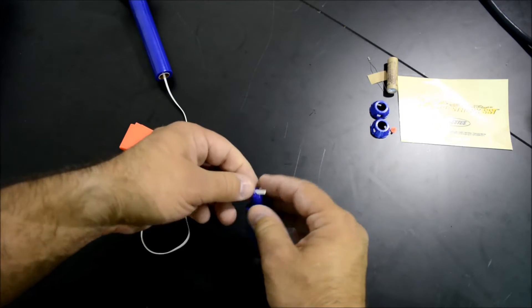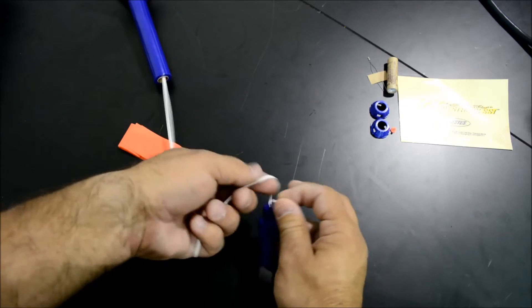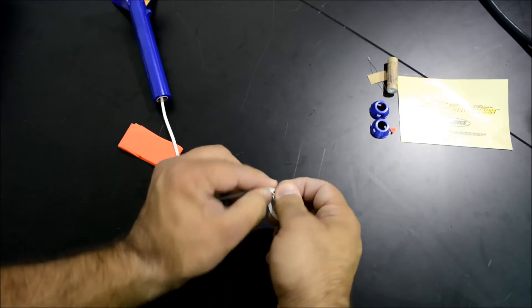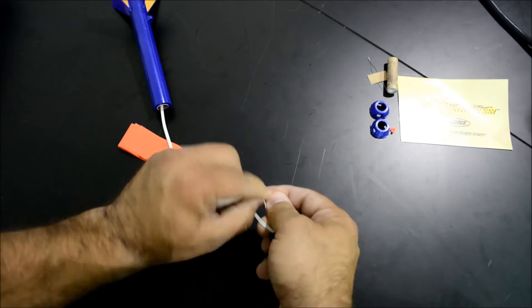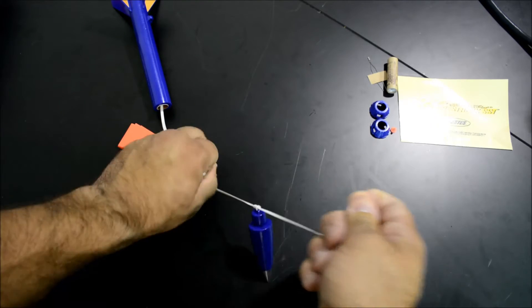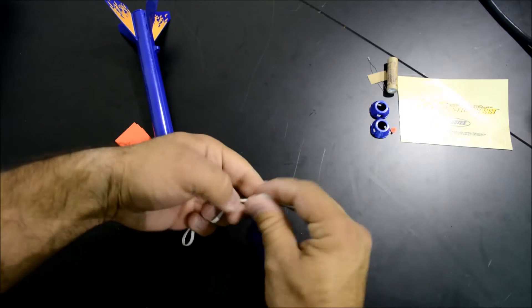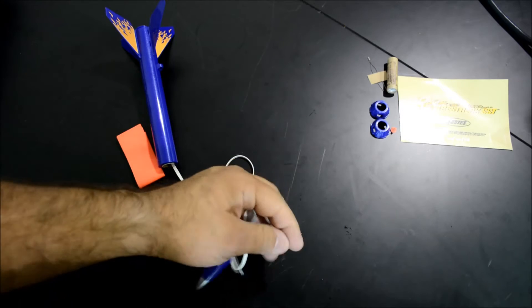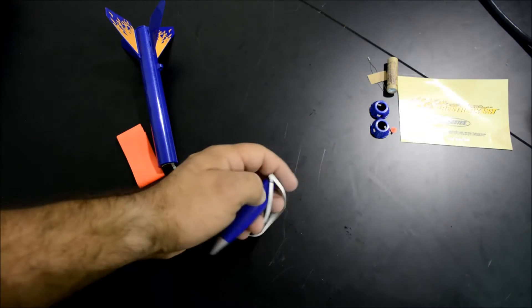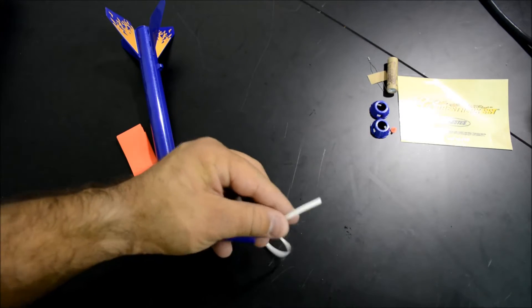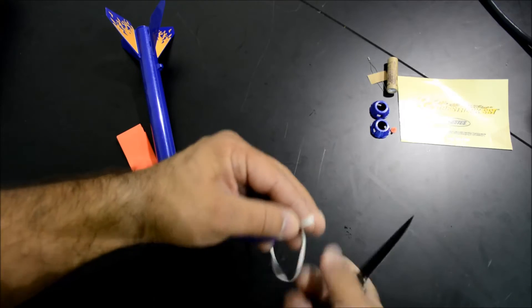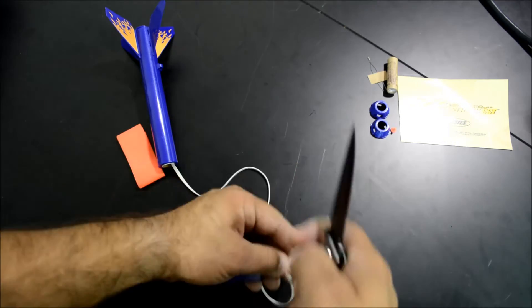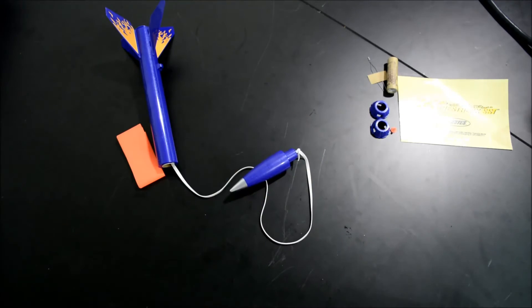You're going to want to tie the shock cord to the other end of the nose cone. A double knot here would work, and then I'm just going to trim a little bit of the extra shock cord. There we go.